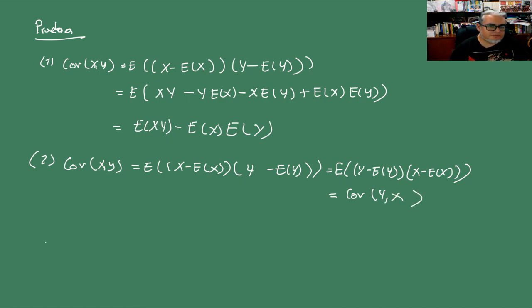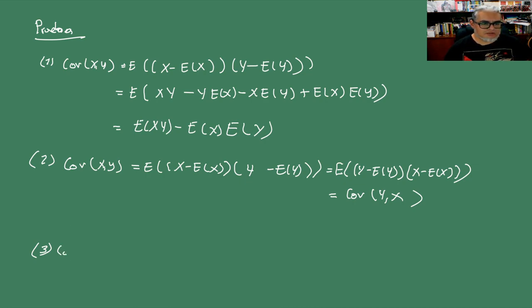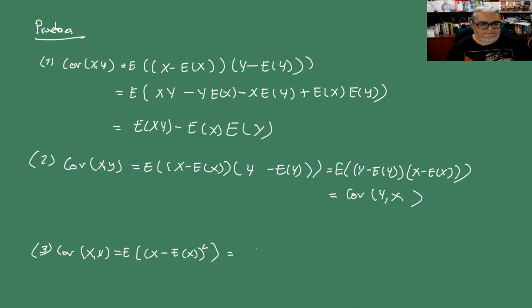Propiedad 3: Cov(X,X) = E[(X − E[X])²], que es directamente la varianza de X.